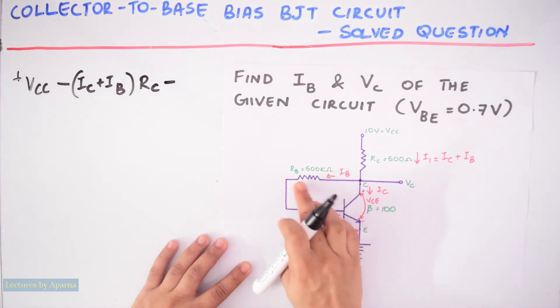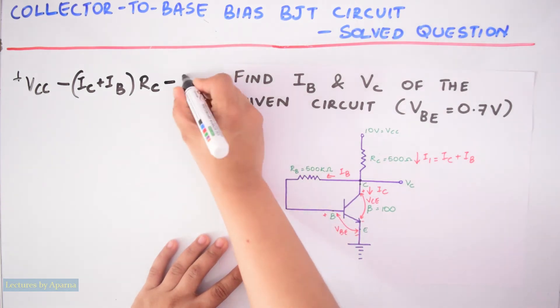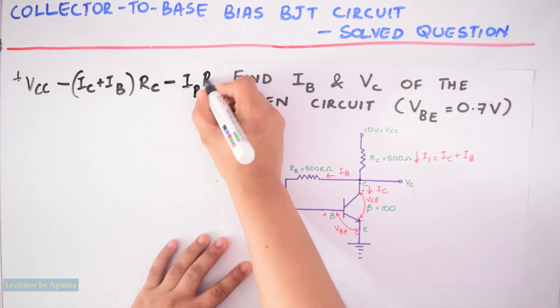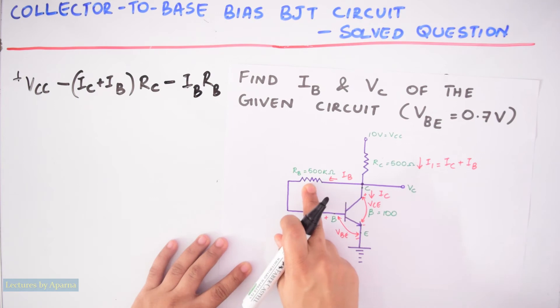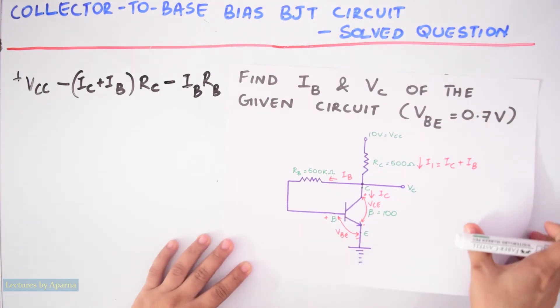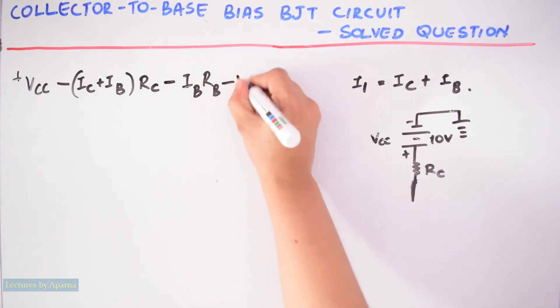So here again it is a decrease in potential because current is flowing from a higher potential to lower potential. So it is minus IBRB. When I reach here it is a decrease in potential, so it is minus VBE equal to 0.